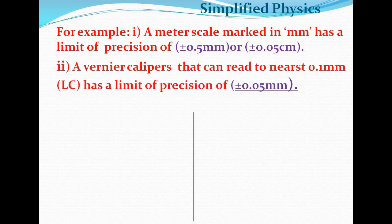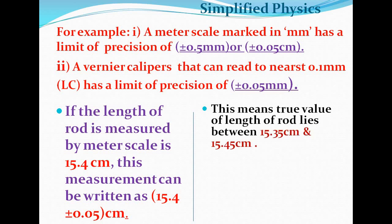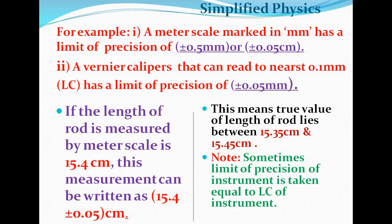Vernier calipers have a limit of precision of plus or minus 0.05 millimeter. If a length is measured as 15.4 centimeters, the measurement can be written as 15.4 plus or minus 0.05 centimeter — the limit of precision of the meter scale. This means the reading lies between 15.35 centimeter and 15.45 centimeter. Note that sometimes the least count of an instrument is taken as the limit of precision.